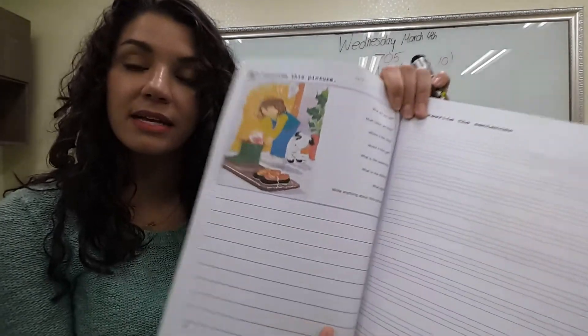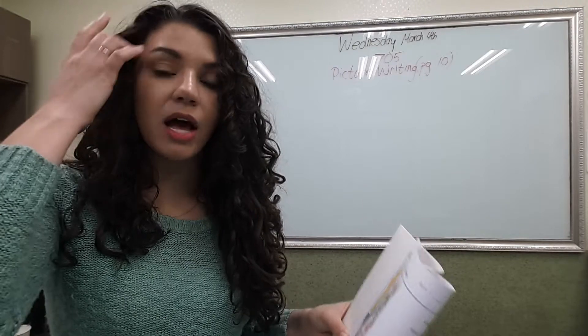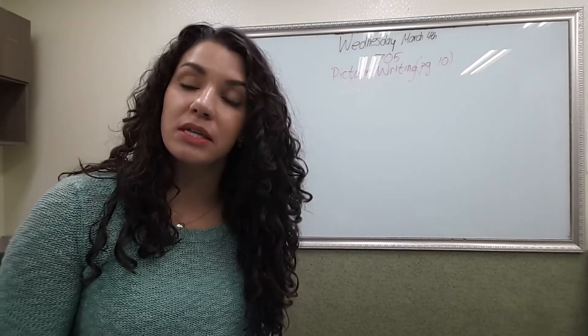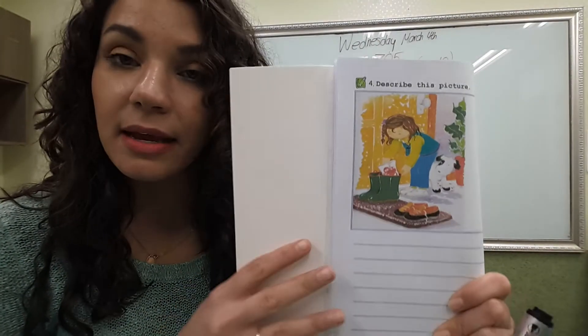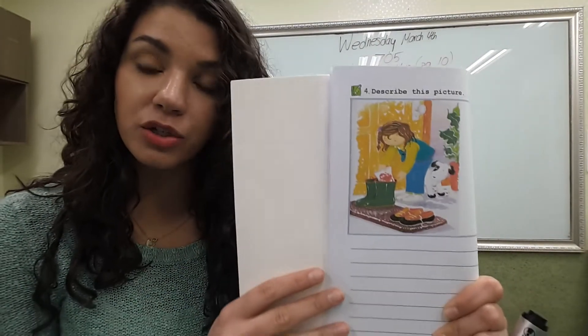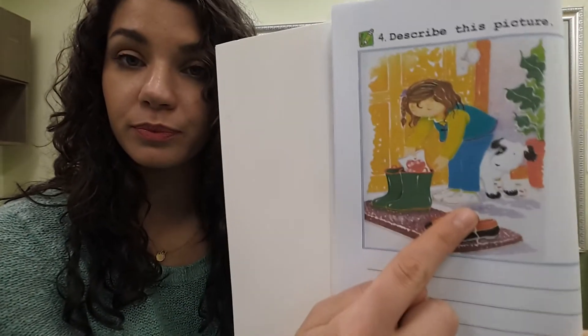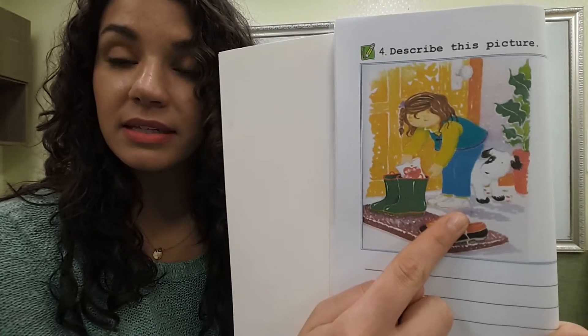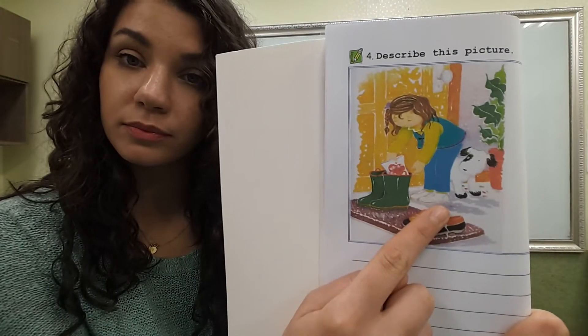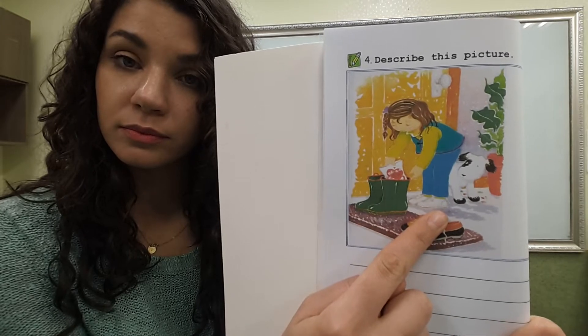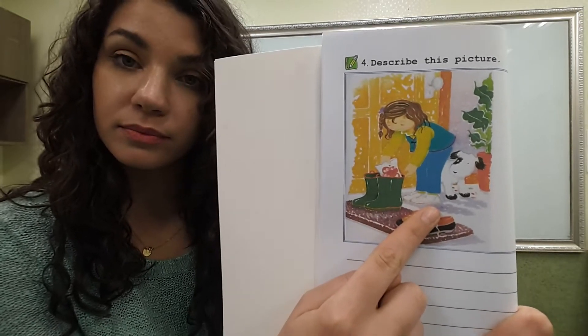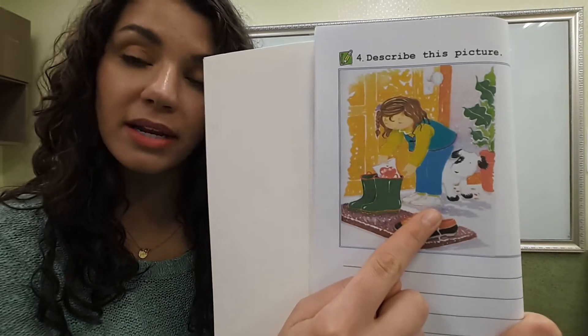Open your books and let's look at the picture together. Before we begin writing, it's important to study the picture and think to ourselves, what do we see? The first thing we should always pay attention to are the people. So who is the person in this picture? Is it a boy or a girl? What is she wearing? What is she doing?